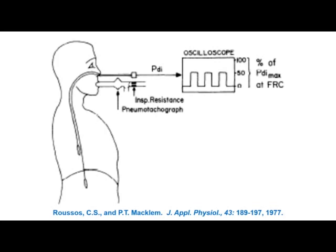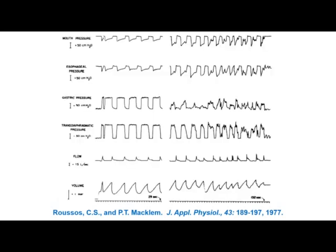Roussos and Macklem published an important study in 1977 demonstrating that ventilatory muscles, like other skeletal muscles, could fatigue. They placed esophageal and intragastric balloons to measure transdiaphragmatic pressure, and had subjects breathe through an inspiratory resistance so they had to generate significant inspiratory pressure to obtain a breath. They exhaled without resistance, measured maximal transdiaphragmatic pressure, and set resistance at given percentages of max PDI — for example, 90%, 80%, 70% — to see how long subjects could sustain it.